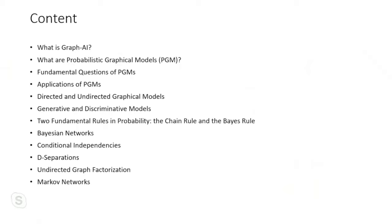In Bayesian networks I'll define conditional independences and random variable independences — 'independencies' is how the community pronounces it. Beyond that I'll cover d-separations. Then I'll briefly touch on undirected graphs, factorization, and Markov networks. That covers the undirected graphical models side.